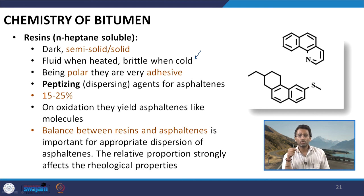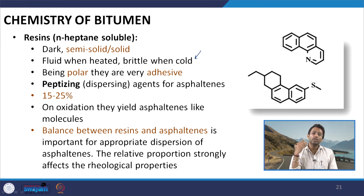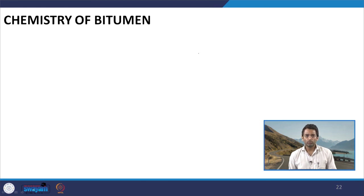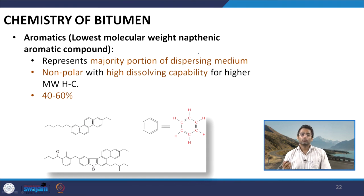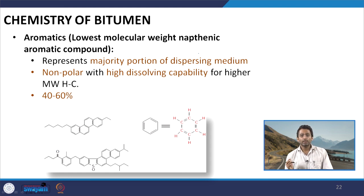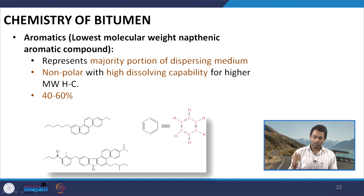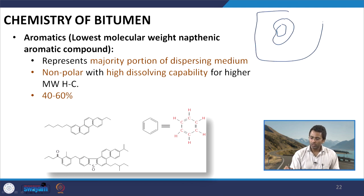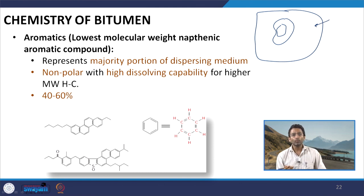The relative proportion of resins and asphaltenes strongly affects the rheological property of bitumen. Once we subject the resin to high temperature or oxidation, it will yield asphaltene-like molecules. The aromatic molecules are the lowest molecular weight naphthenic aromatic compounds and they represent the major portion of the dispersing medium — meaning the asphaltenes which are peptized by the resins are basically dispersed in this aromatic system.